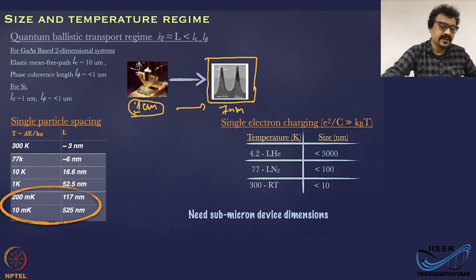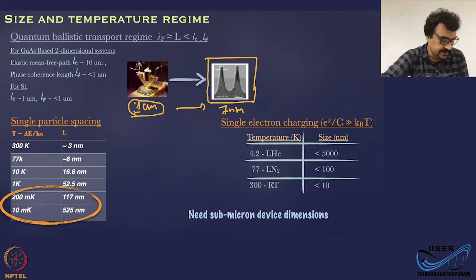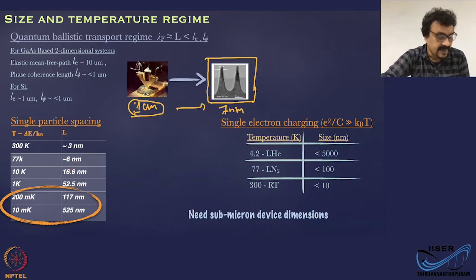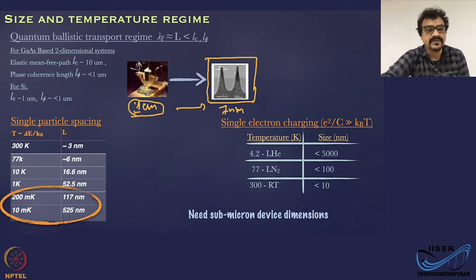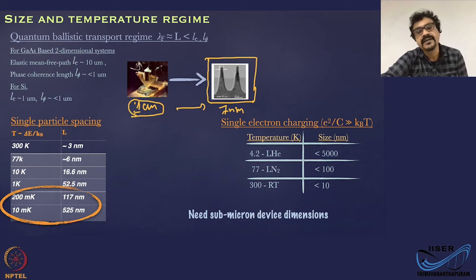Let us take a quick look at the length scales we are aiming for. The length scales where we need to see single-particle spacing or single-particle phenomena are a few hundreds of nanometres. You can also observe this at lower dimensions, but that requires much more sophisticated fabrication technologies. What is generally available is a range from a few tens of nanometres to a few hundreds of nanometres to about a micrometre, which will operate in the cryogenic temperature regime, like below 4 Kelvin or below 1 Kelvin.